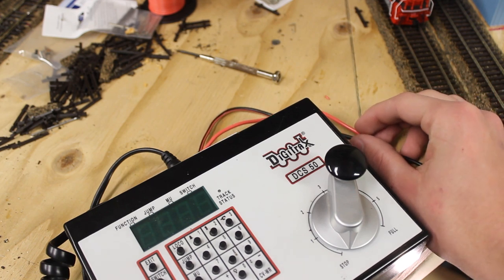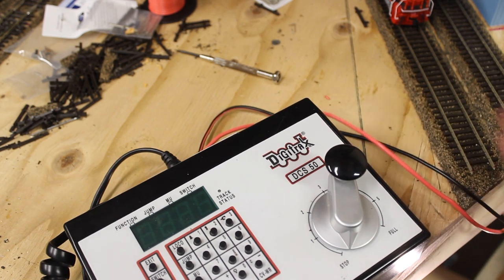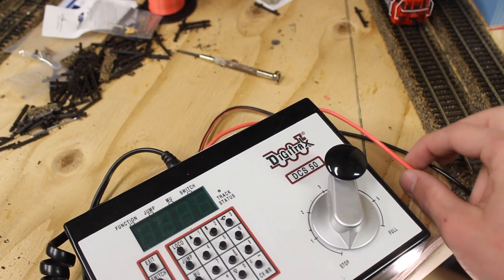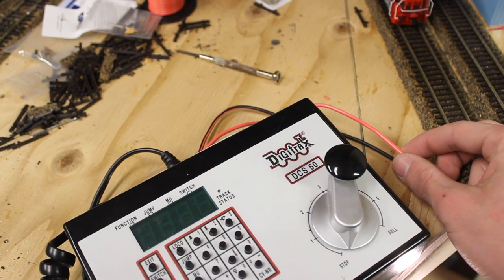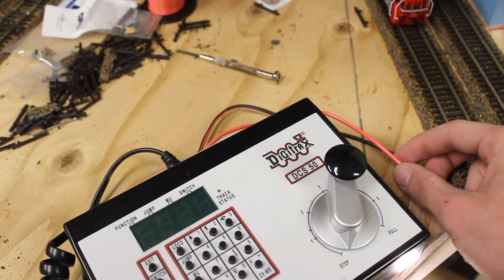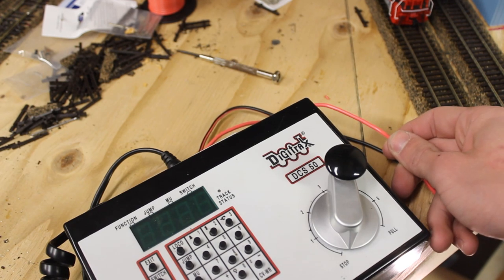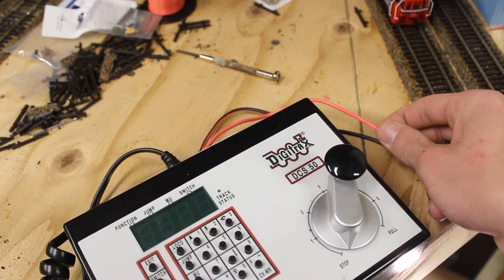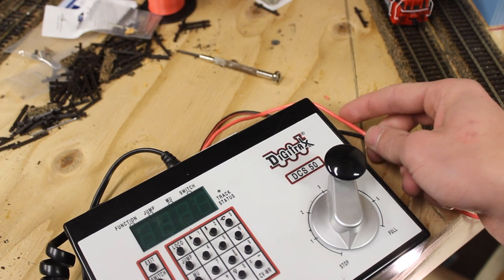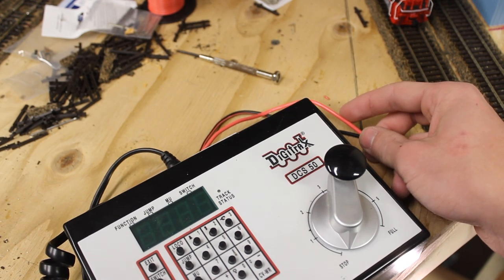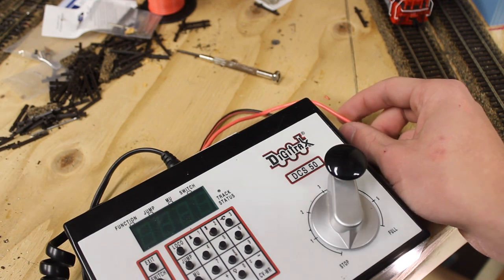Now depending on the size of your layout will depend on some things for the feeder wire or the main bus wire here. The bigger your layout, the thicker wire you're going to want to use. So for this here I have an 18 gauge main bus wire and I have 22 gauge feeders running off of this.